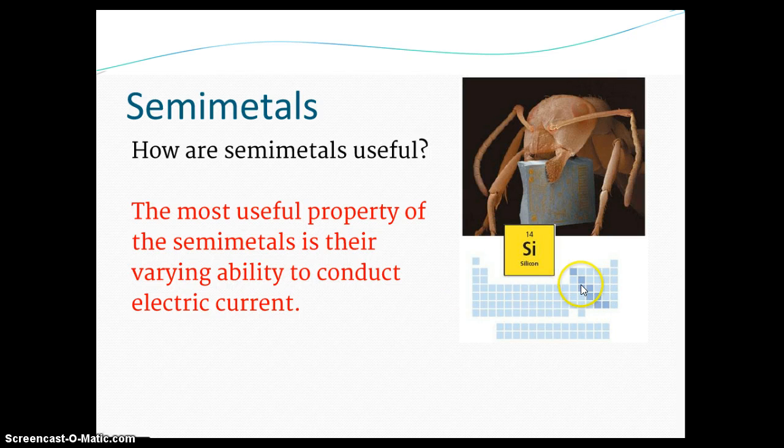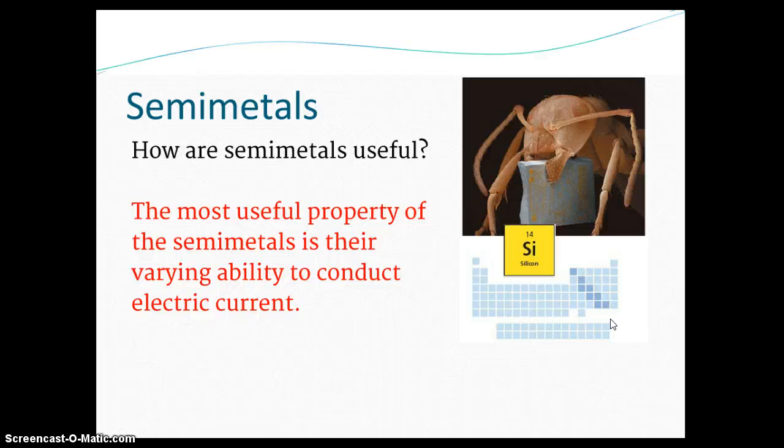Semimetals, it's this little zigzaggy line down here. Silicon chips that are in your computers. Good example, the most useful property of the semimetals is that they can conduct electrical current and heat, but not so much heat that it's going to end up melting your computer or anything like that. But they can conduct current.